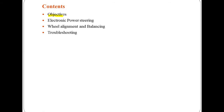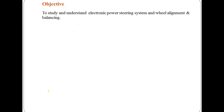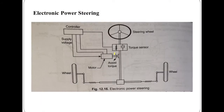We will start our lecture with the objectives. We will discuss about the electronic power steering system, wheel alignment and balancing, and after that we will discuss the troubleshooting of the wheel alignment. The objective of today's lecture is to study and understand the electronic power steering system and wheel alignment and balancing. So let's start with the electronic power steering system.